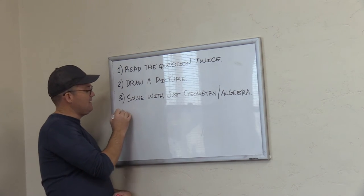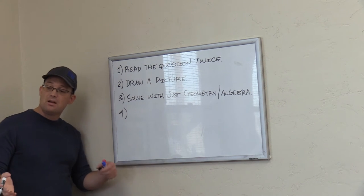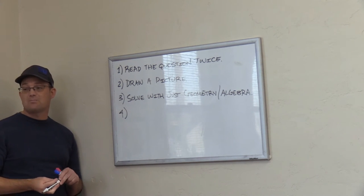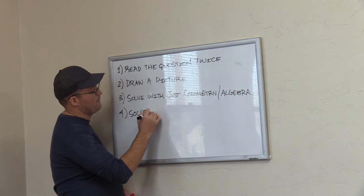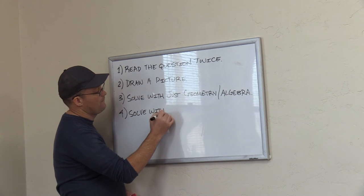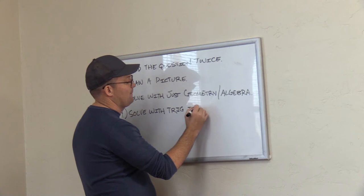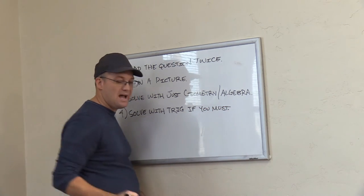Next step: if you can't solve it with geometry and algebra, so if you go back to the second problem we worked with the deflection angle, we couldn't do that with Pythagorean theorem, we needed trig. So the next step is solve with trig if you must.